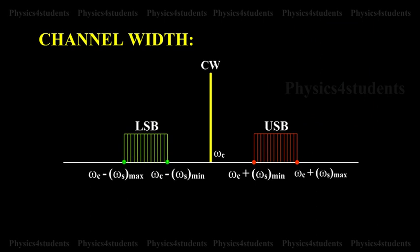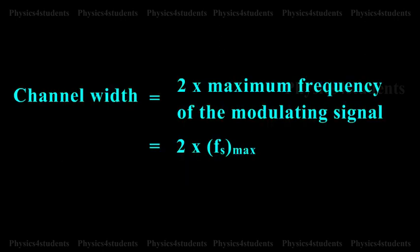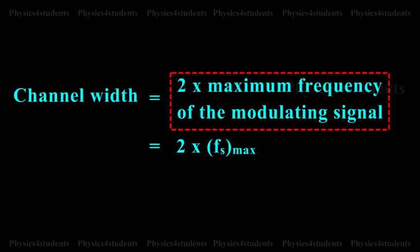The channel width is given by the difference between extreme frequencies, i.e., between maximum frequency of USB and minimum frequency of LSB. Therefore, channel width is equal to 2 times the maximum frequency of the modulating signal, i.e., equal to 2 into FS maximum.